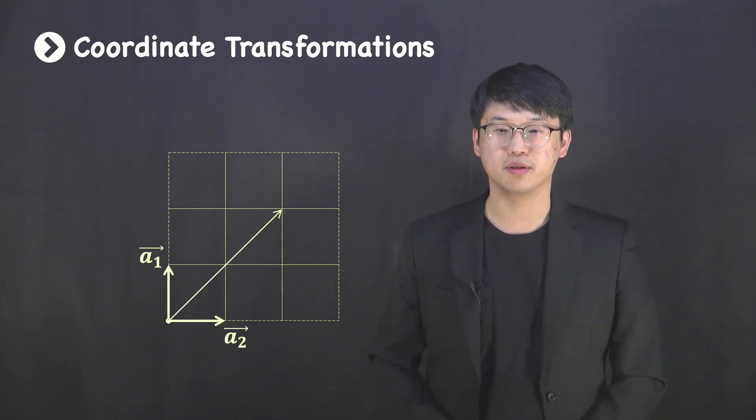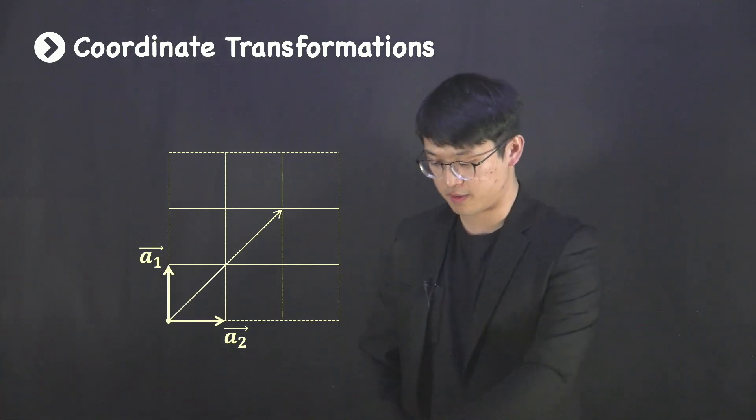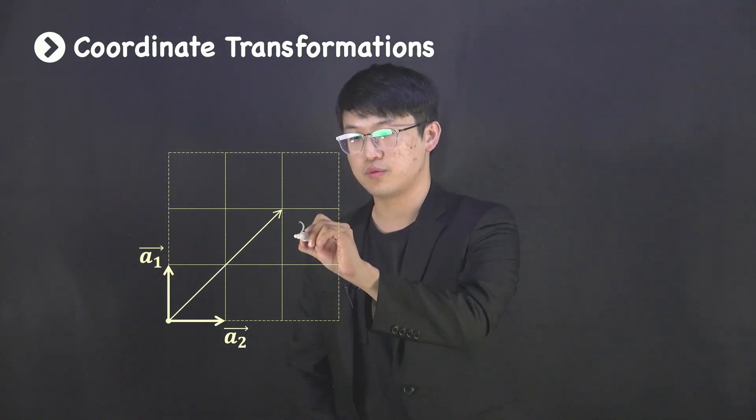To make it much simpler, I've prepared a two-dimensional coordinate with a vector sitting at (2,2).